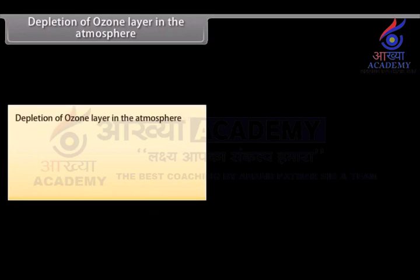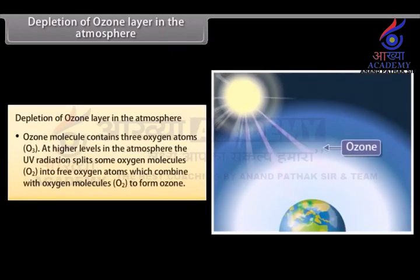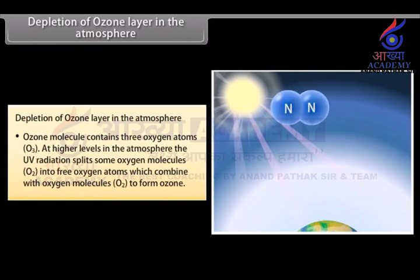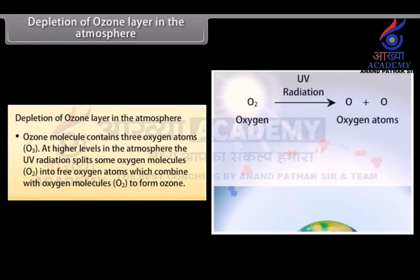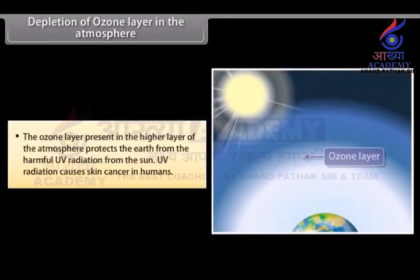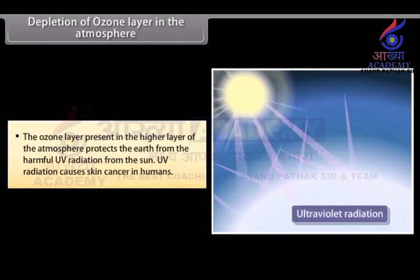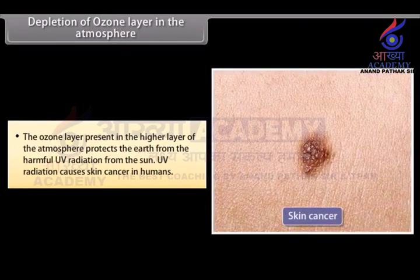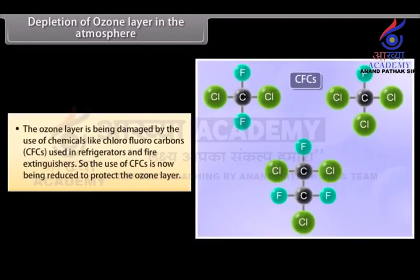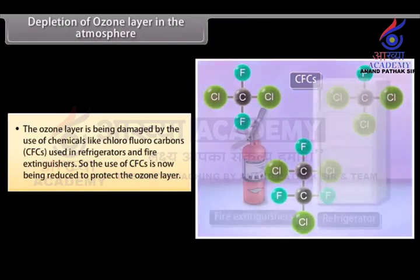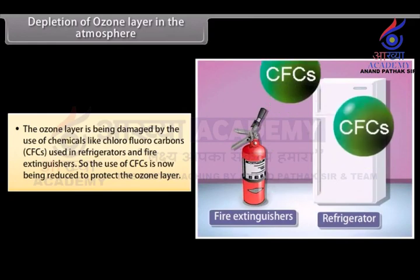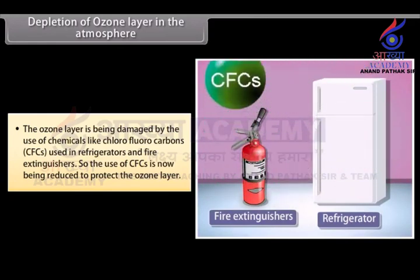Depletion of ozone layer: Ozone molecules contain three oxygen atoms, O3. At higher levels in the atmosphere, UV radiation splits some oxygen molecules, O2, into free oxygen atoms, which combine with O2 to form ozone. The ozone layer protects the earth from harmful UV radiation from the sun, which causes skin cancer in humans. The ozone layer is being damaged by chemicals like chlorofluorocarbons (CFCs), used in refrigerators and fire extinguishers. The use of CFCs is now being reduced to protect the ozone layer.